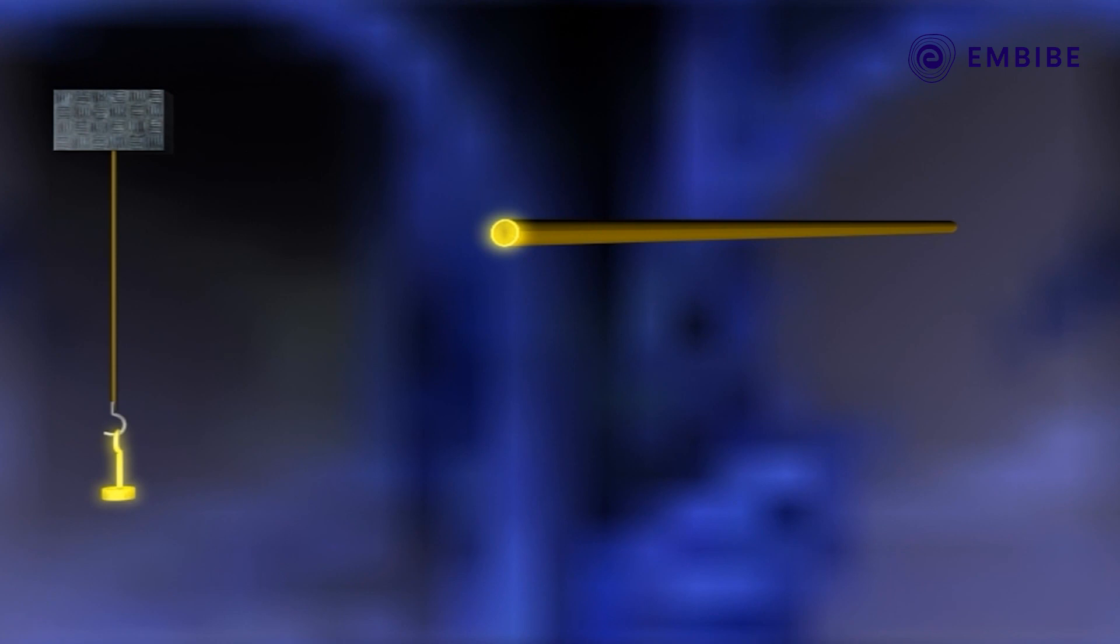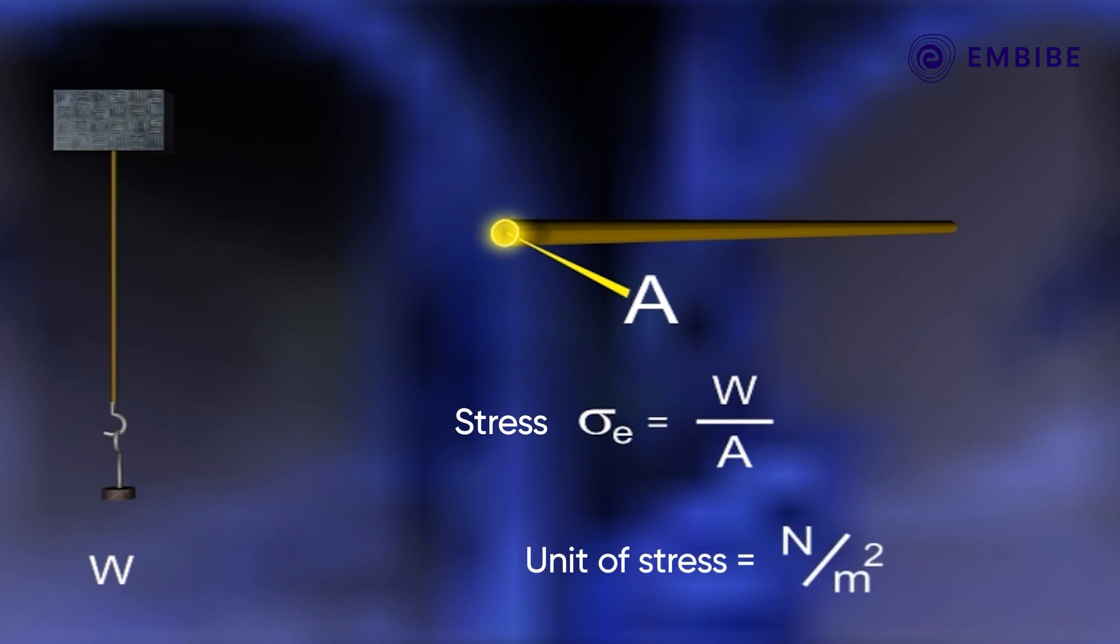If the force or the weight applied on the wire is W and this force acts on A, the area of cross-section of the wire, then the stress is given by σₑ = W/A. The unit of stress is Newton per meter square.